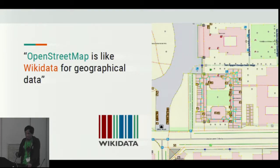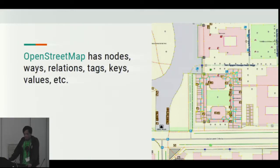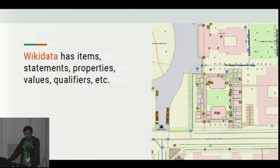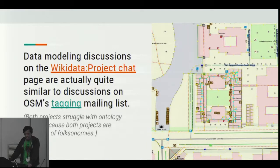I would like to thank Daniel for explaining all of the different things that you can do using Wikidata. OpenStreetMap, as we know, has nodes, ways, relations, tags, keys, values, et cetera. In a similar way, Wikidata has items, statements, properties, values, qualifiers, et cetera. These are quite similar things and concepts. And actually, if you follow the data modeling discussions on the Wikidata project chat page, they're actually quite similar to the discussions on OSM's tag mailing list.